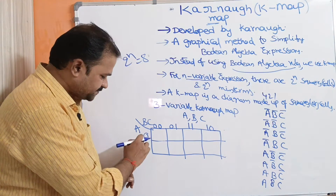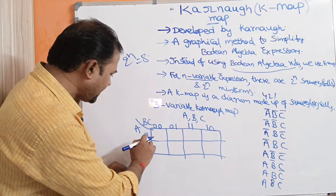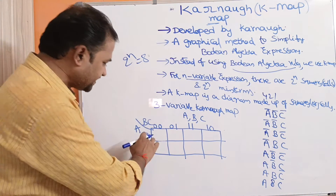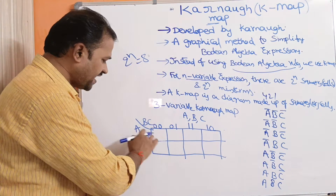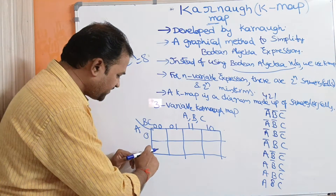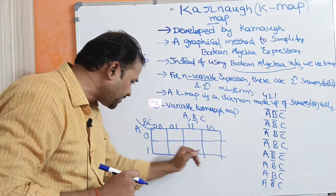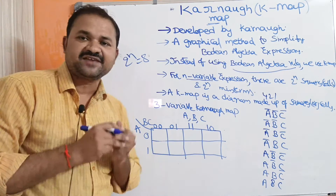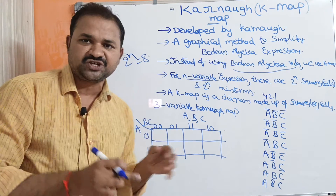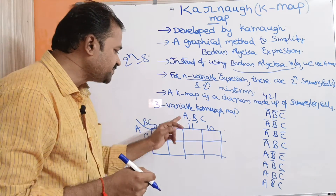On the K-map, the horizontal axis specifies A, whereas the vertical axis specifies B and C. A value of 0 on the horizontal axis means A-bar, and a value of 1 means A is 1. On the vertical axis, B C = 0,0 means B-bar C-bar, and 0,1 means B-bar C.